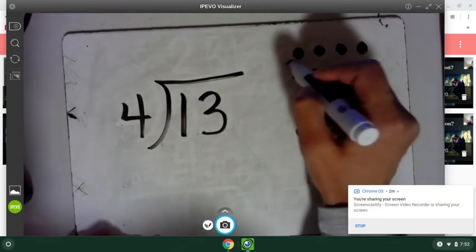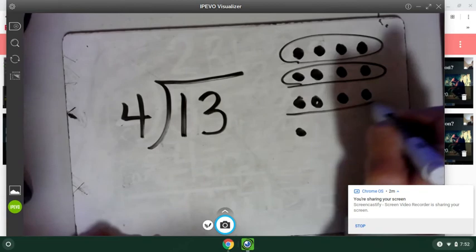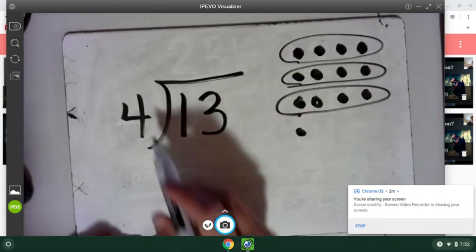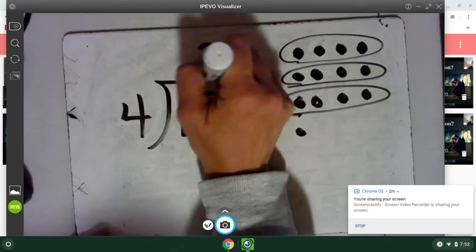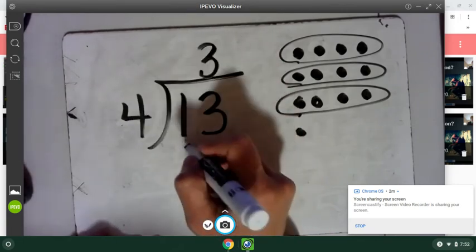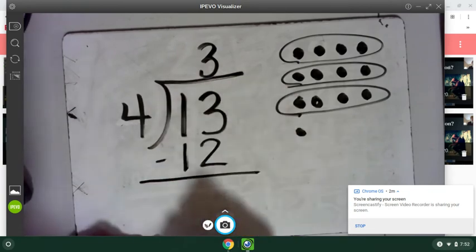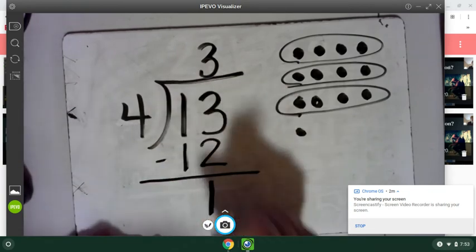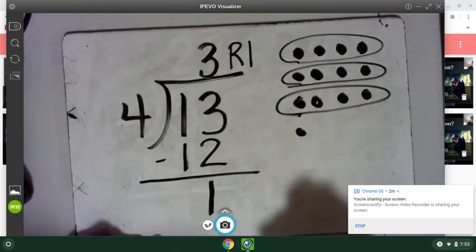and I make groups of four. I can do that, and I can make one, two, three groups. So three groups of four equals 12. I take that away from it, and I'm left with one. So I put it as my remainder, and then how do I check?